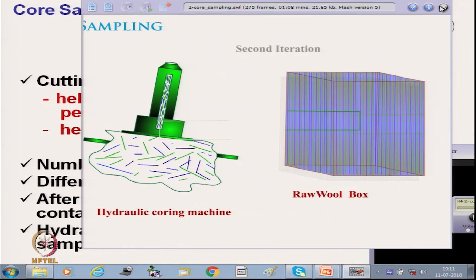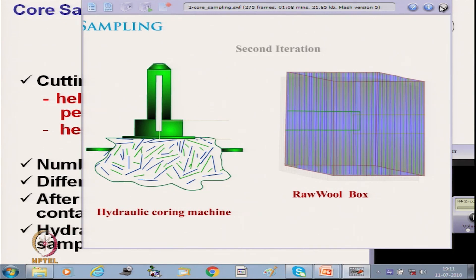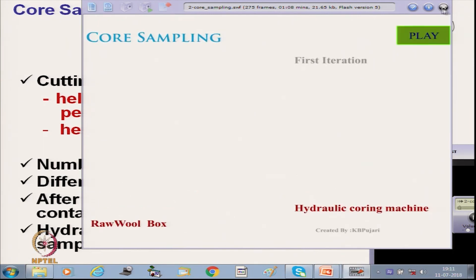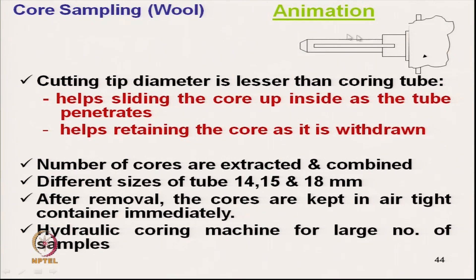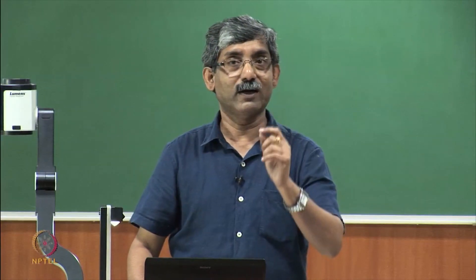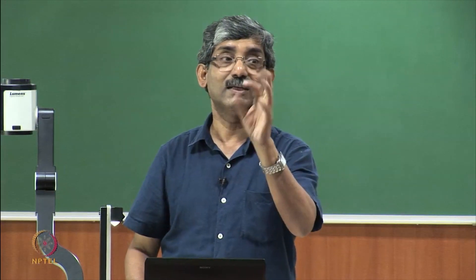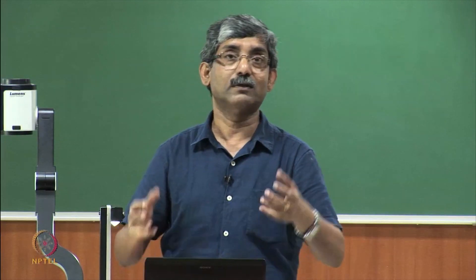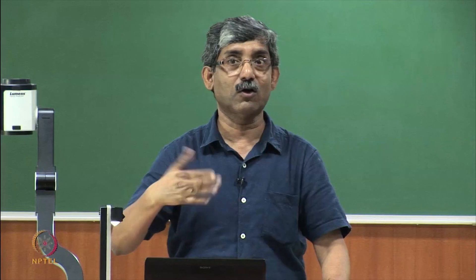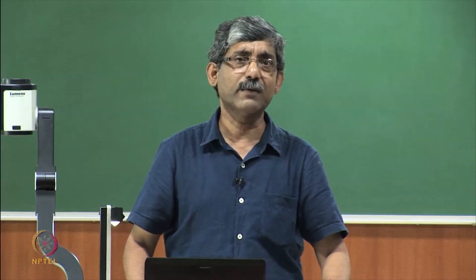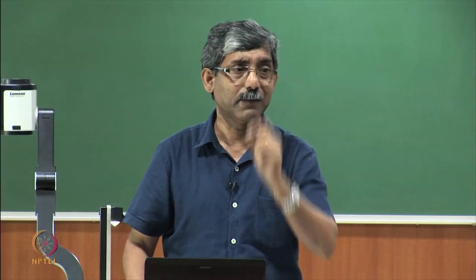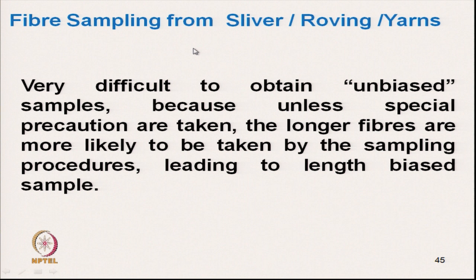One important point: the coring tube cuts the fiber due to the cutting tip, so we must test only parameters not dependent on fiber length. We will not test fiber length. This sample is used for grease content, which does not depend on whether the fiber is cut, and to some extent for fiber diameter measurement.